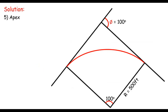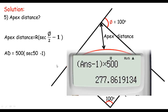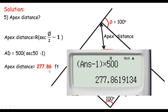Next, let me calculate the apex distance. The apex distance is the distance from the apex point to the intersection point. The formula is E = R × (sec(Δ/2) − 1), so E = 500 × (sec(50°) − 1), giving us an apex distance of 277.86 feet. Remember, secant is just 1 over cosine — don't get confused.